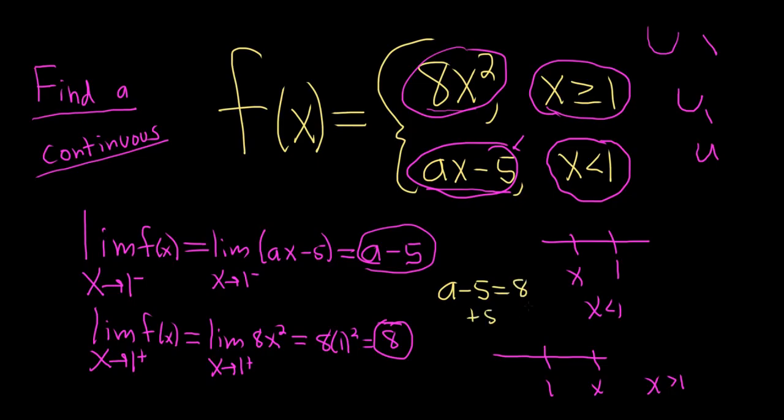Adding 5 to both sides gives us the wonderful value of 13. And that is the value of a, which makes this function continuous. I hope this video has been helpful. Good luck.